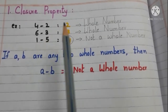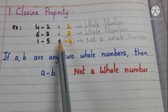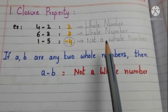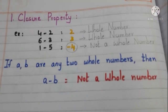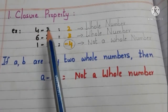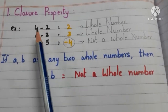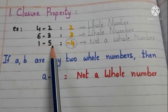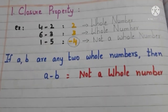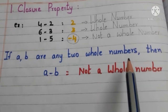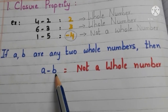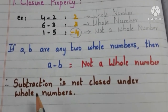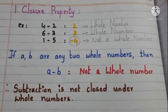Now, take 1 and 5 and find the difference. 1 minus 5 is equal to minus 4. Here, minus 4 is a negative number, and it is not a whole number. We can observe that the difference between two whole numbers is a whole number whenever the minuend is greater than the subtrahend. If the minuend is smaller than the subtrahend, we are not getting a whole number. So, if a and b are any two whole numbers, then a minus b is not always a whole number. We can conclude that subtraction is not closed under whole numbers.